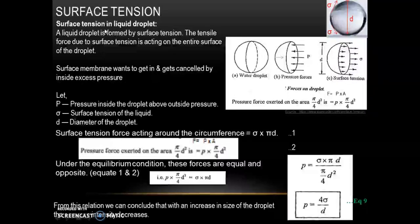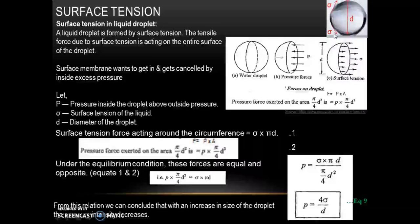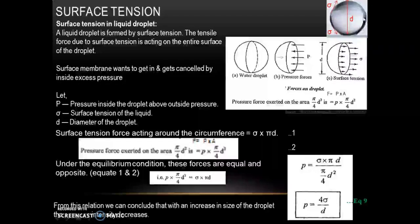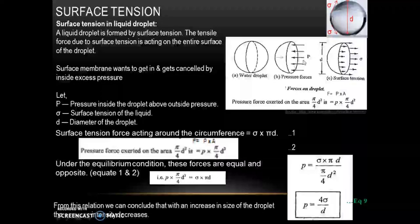Now we will find out the surface tension on a liquid droplet. This is a liquid droplet of diameter D, and this droplet is formed due to surface tension sigma. The tensile force due to surface tension acts on the entire surface of the droplet.